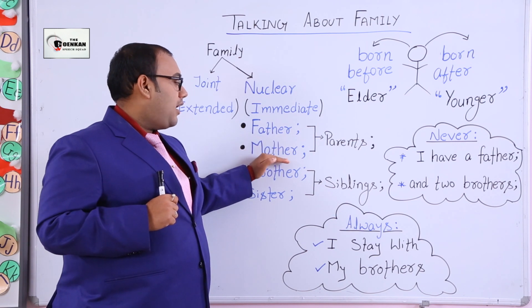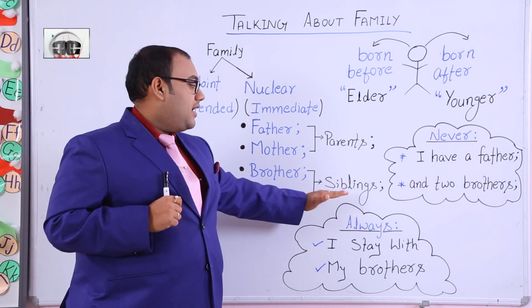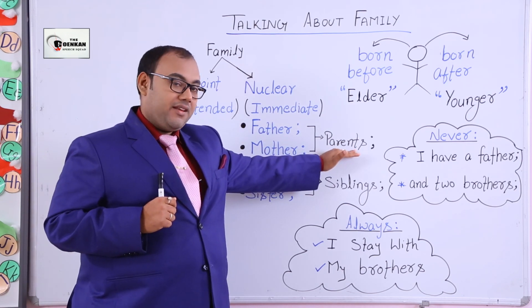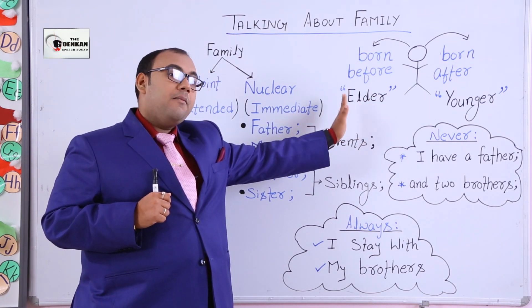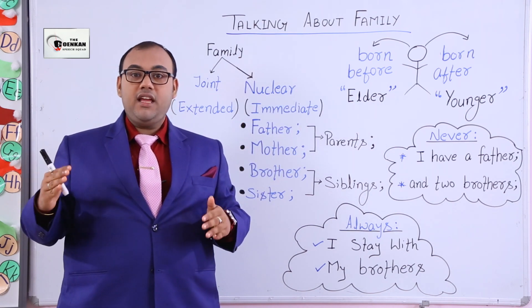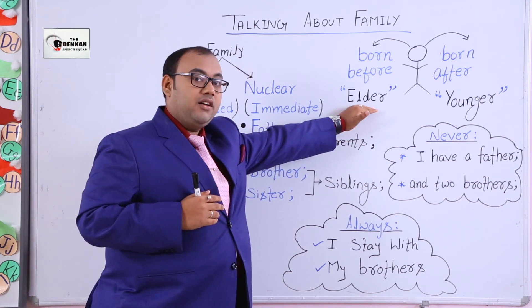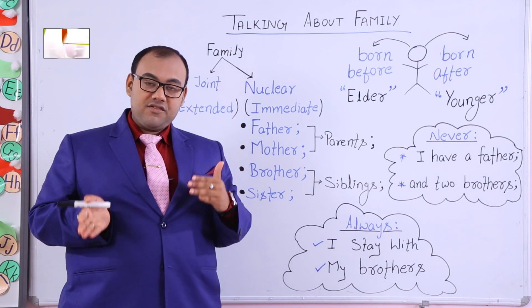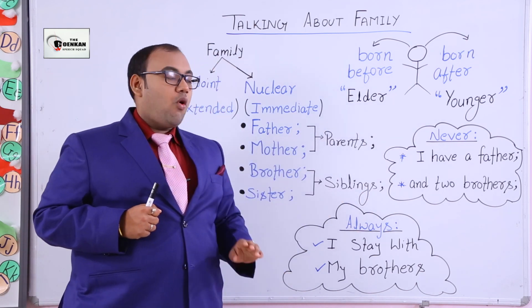The members who belong to the immediate family are our parents, that is father and mother, and then siblings. The word we use for our brother and sister is 'siblings' and the word we use for our father and mother is 'parents.' If a brother or sister is born before me, they will be called elder brother or elder sister. If a brother or sister is born after my birth, they will be called younger brother or younger sister.